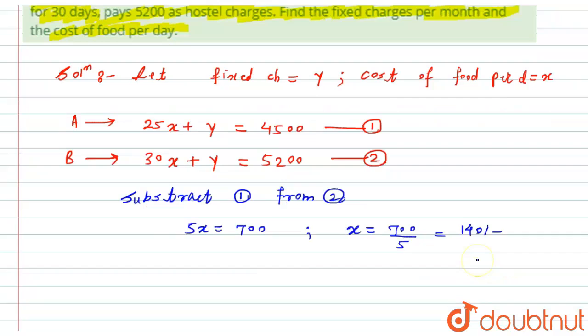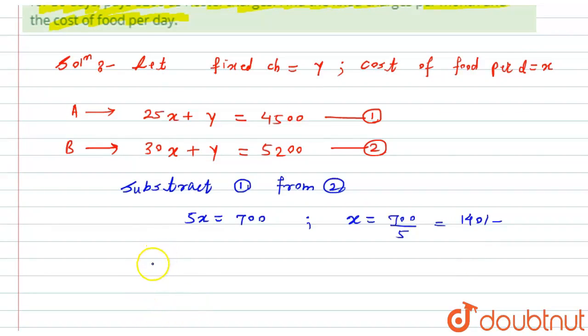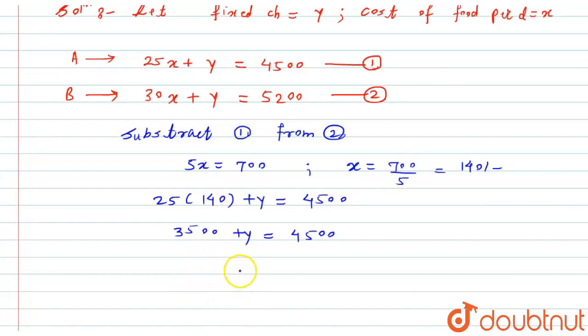Now I will put the value of x in equation number one. I get 25 in bracket, I will put the value of x which is 140, plus y equals 4500. Now I will multiply this, so I will get 3500 plus y equals 4500. Now I will take this term to that side of equals sign.